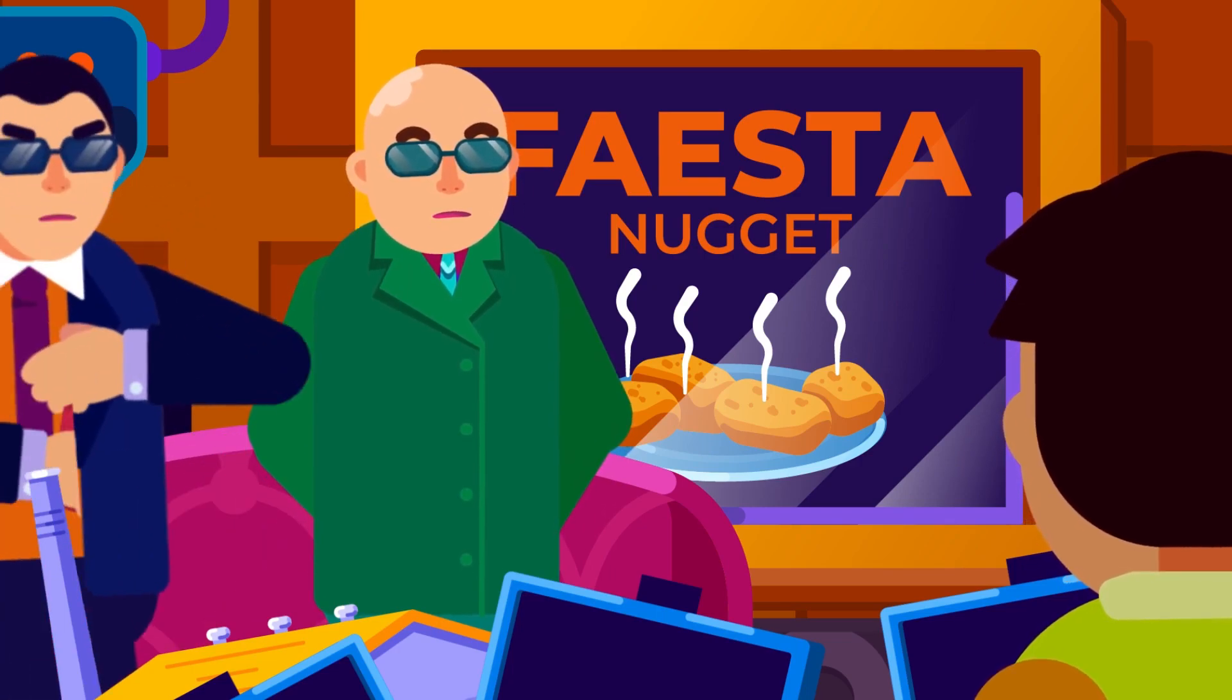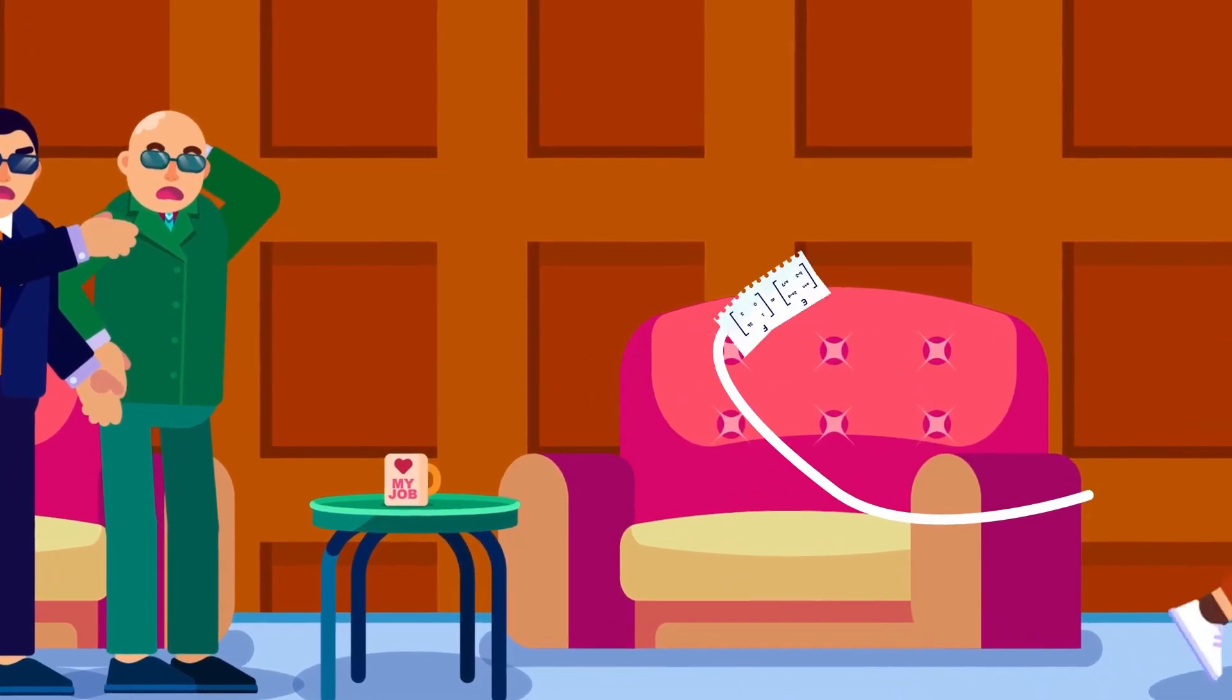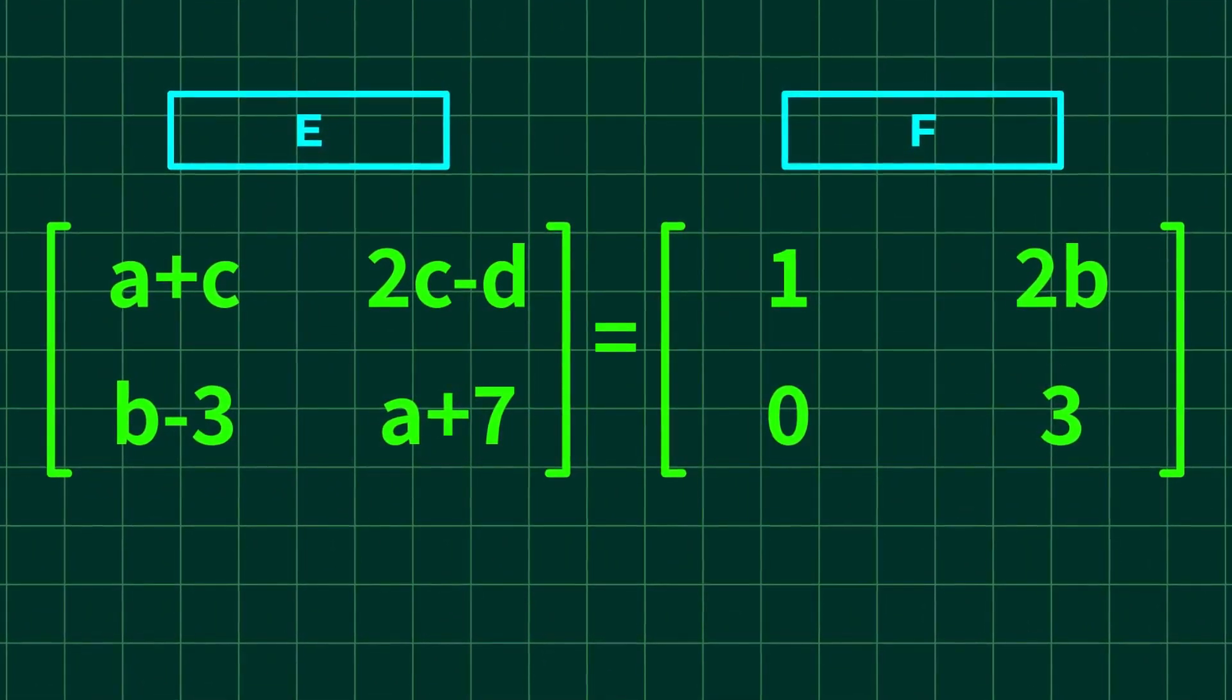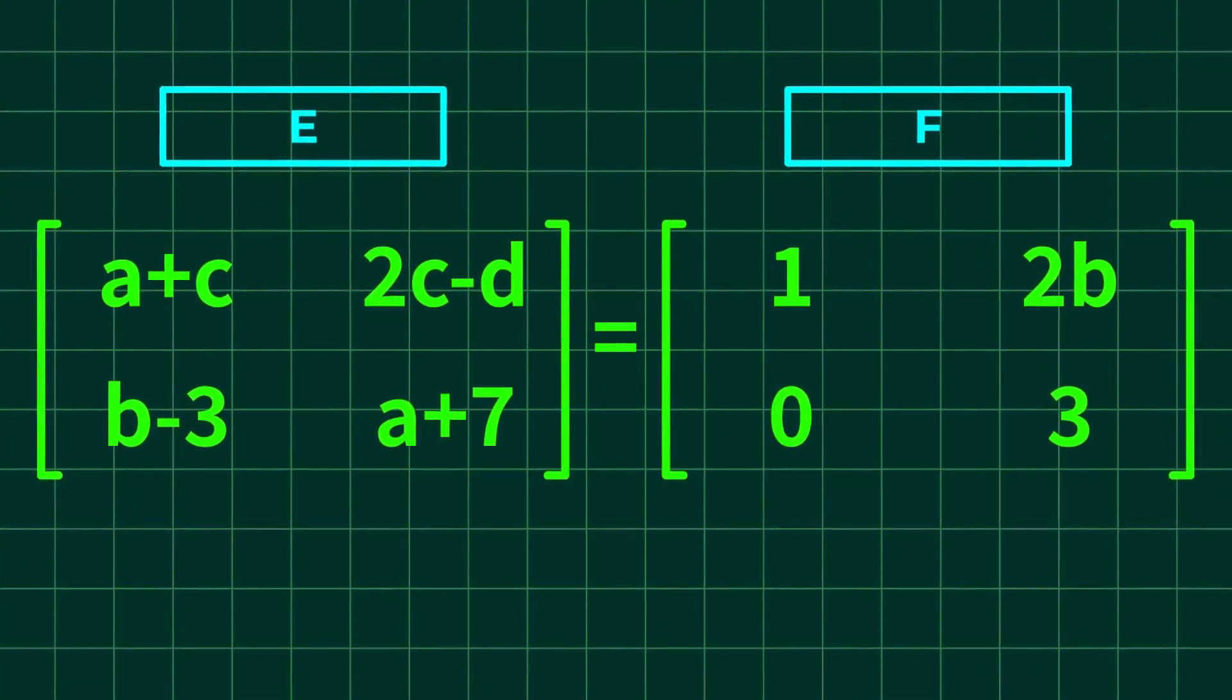Now, you've learned about the basics of the matrix. To check your understanding about our discussion so far, can you identify the value of A, B, and C in the following equal matrices E and F? Share your comments below.